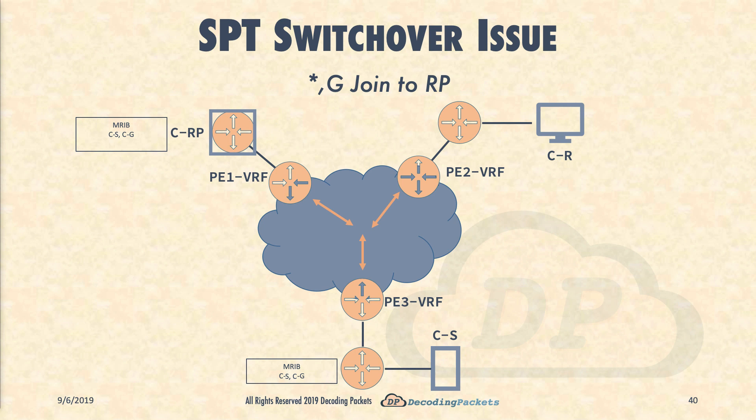To refresh on all things PIM, we recommend the CCIE/JNCIE IP Multicast lecture series on the same channel. Specifically, the PIM SPT switchover process was covered in lecture 10 of that series, the Advanced PIM Sparse Mode Deep Dive Part 3. We are also assuming you have watched the C-Multicast Routes video from this MVPN series — that would be video 17. All links are in the description box below.